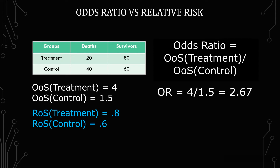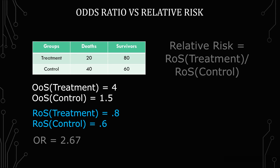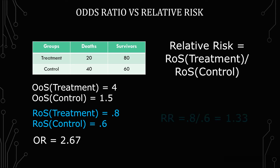For relative risk, I am going to, again, do treatment over control and get 0.8 over 0.6, which gives you 1.333 repeating.